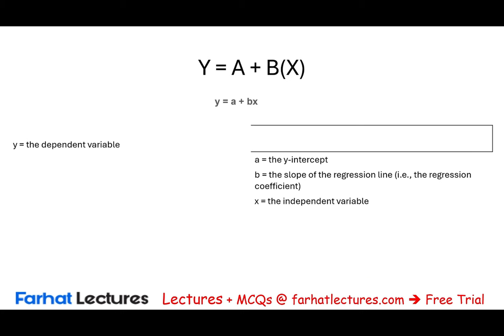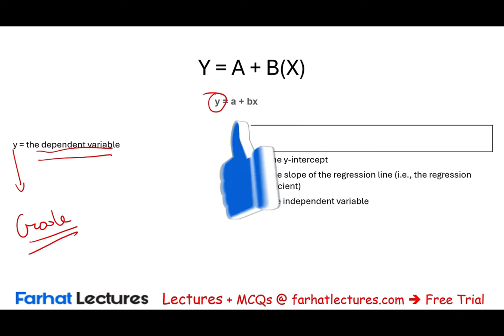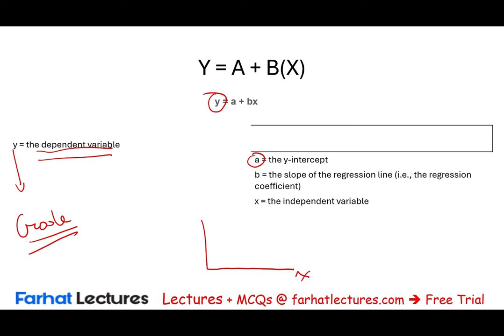Let's explain the components of this formula, starting with y. y is the dependent variable — in our illustration, y is your grade, the variable we are trying to predict. A is the y-intercept. Looking at a graph with x on the horizontal axis and y on the vertical axis, the y-intercept is where the regression line crosses the y-axis.